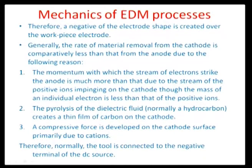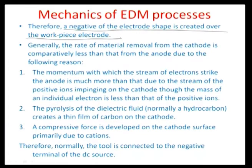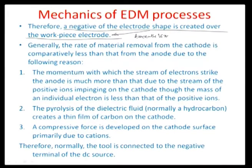Today we will look in more depth at the various issues regarding the EDM process. As illustrated before, a negative of the electrode shape is created over the workpiece electrode — the same die-sinking operation as in other non-conventional processes like ECM. Whatever the electrode shape, a negative of it is exactly replicated in the workpiece surface, making it a process amenable to micro-fabrication. The goal is to produce the exact negative replica on the tool of the feature you want to imprint on the surface at the micron scale.